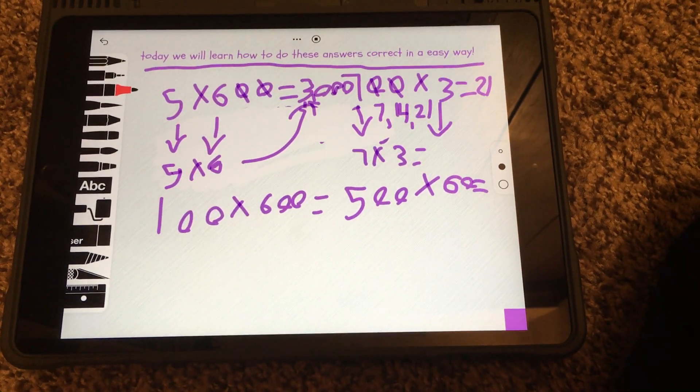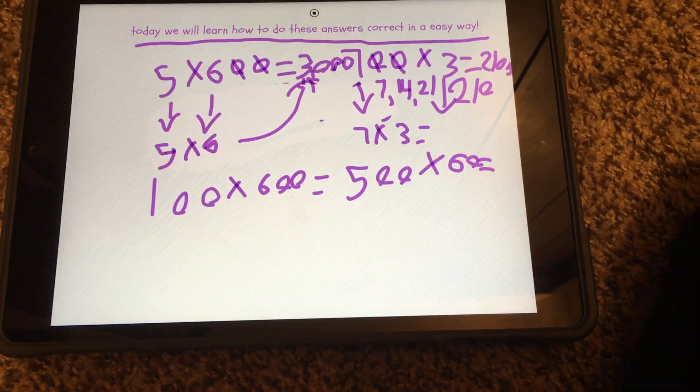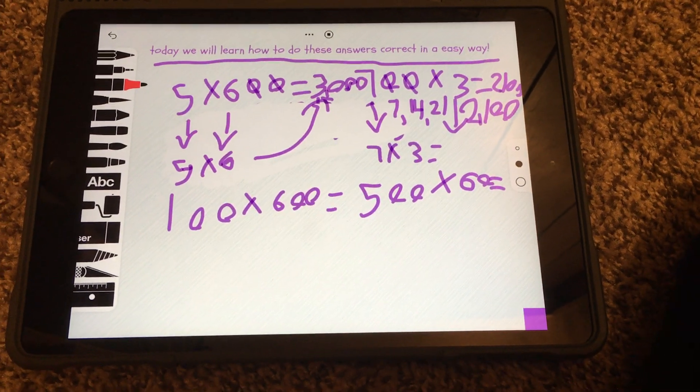Then we need to add those two zeros because we cannot put them to waste. The answer is 2,100. Make sure to put the comma in the right place.